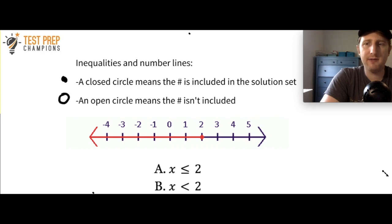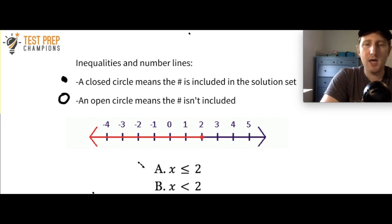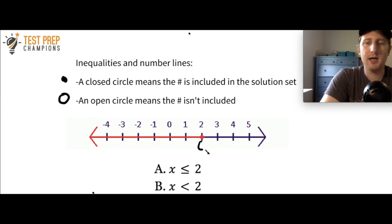Here's another example of an inequality on a graph. Is this the graph of x is less than or equal to 2, or x is less than 2? The graph shows a closed dot, and a closed dot means the number is included in the solution set. So the answer is x is less than or equal to 2. If it were an open dot, the answer would be x is less than 2.